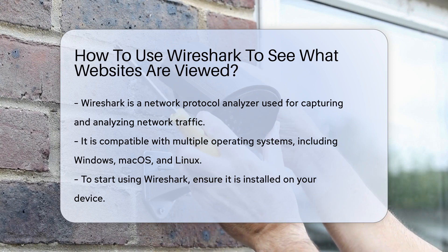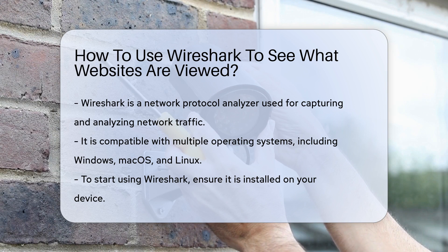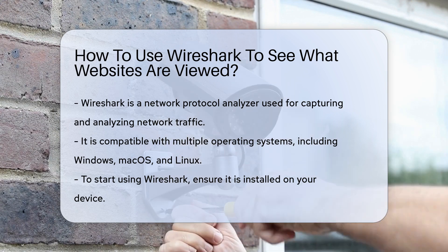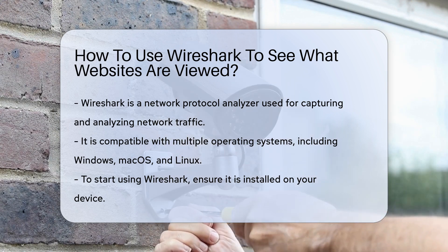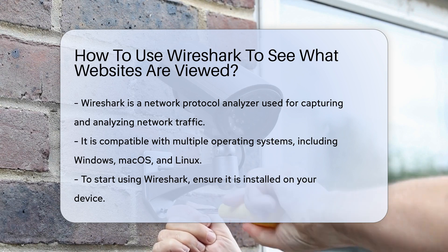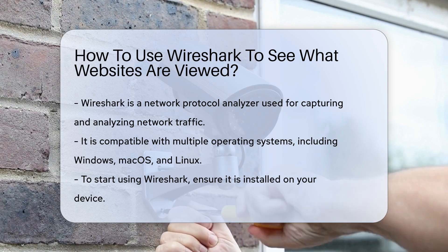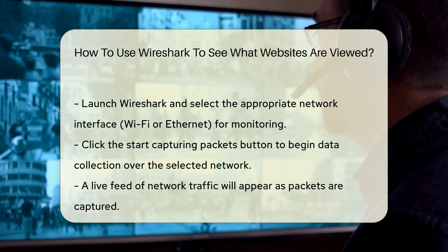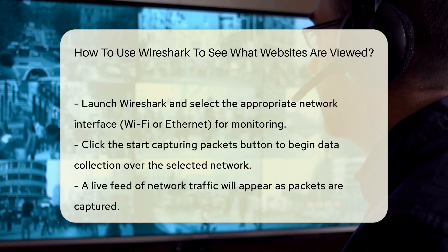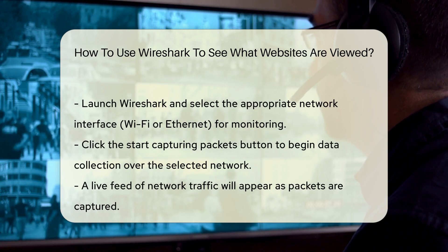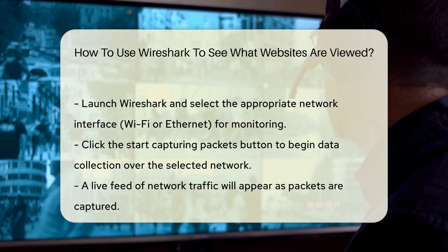First, ensure that you have Wireshark installed on your device. It is available for multiple operating systems including Windows, Mac OS, and Linux. To begin, launch Wireshark and select the network interface you want to monitor. This could be your Wi-Fi or Ethernet connection.